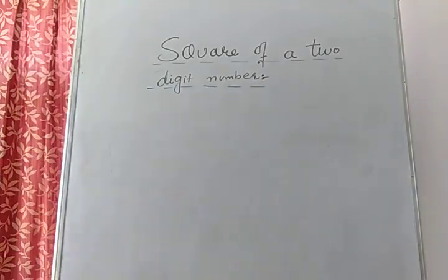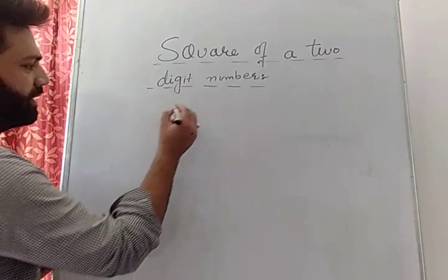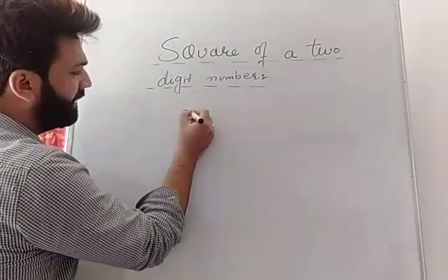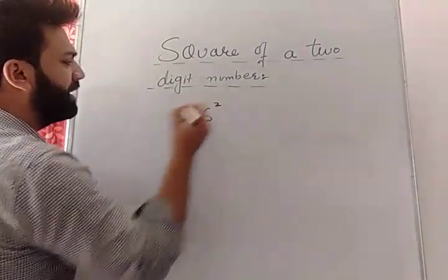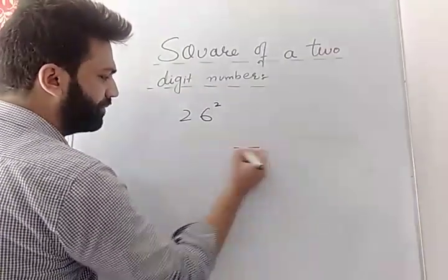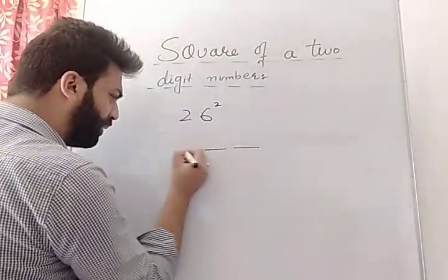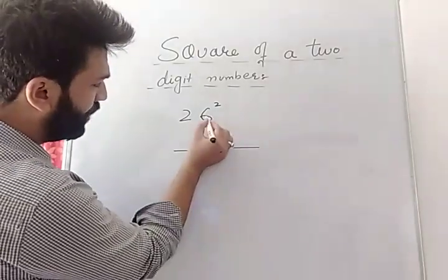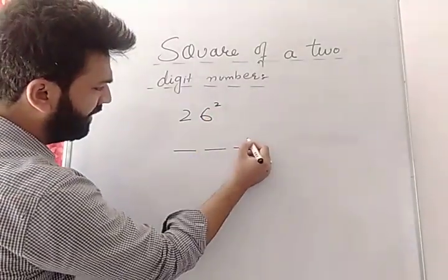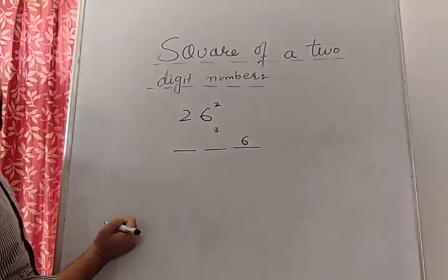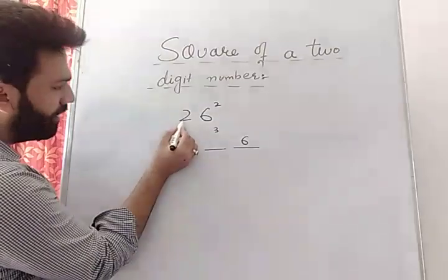So, square of any two-digit number — what to do? Let me take the number 26. We have to find its square without using a calculator. Make three spaces. What is 6 squared? It is 36 — keep 6, carry 3.